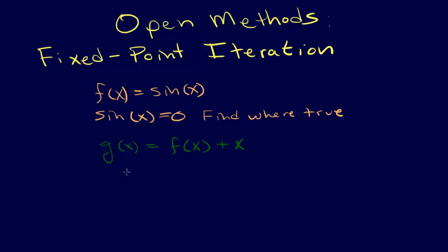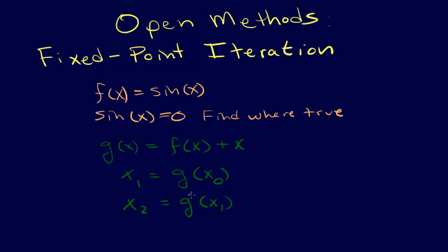Then we say x₁ = g(x₀), and we keep going: x₂ = g(x₁), and so forth. That finds the root of the equation, but algebraically we sort of lose sight of what's going on. So let's look at this graphically.